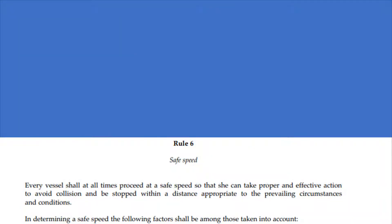Rule 6: Safe Speed. Every vessel shall, at all times, proceed at a safe speed so that she can take proper and effective action to avoid collision and be stopped within a distance appropriate to the prevailing circumstances and conditions. In determining a safe speed, the following factors shall be among those taken into account.